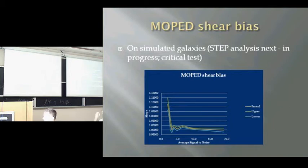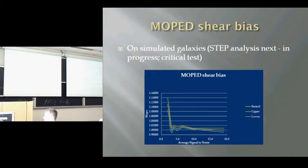These are simulated galaxies — not yet STEP galaxies; that's in progress. Conclusions are that we need better shape measurements, and it's possible we're getting to the point where we have methods that might do the job.